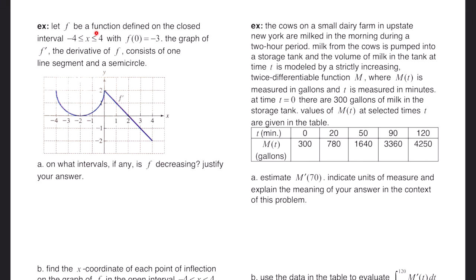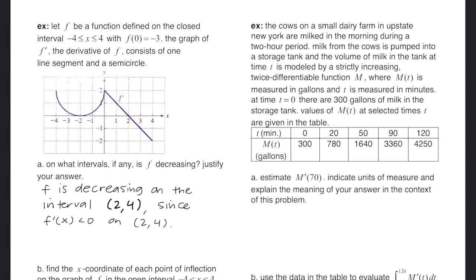This example says let f be a function defined on the closed interval from negative 4 to 4, with f of 0 equals negative 3. The graph of f prime is given with one line segment and a semicircle. Part a asks on what intervals, if any, is f decreasing? For f to be decreasing, f prime must be negative. Looking at the graph of f prime, f prime is negative on the interval from 2 to 4. So f is decreasing on the interval from 2 to 4, since f prime of x is less than 0 there.